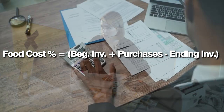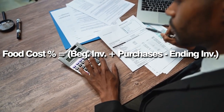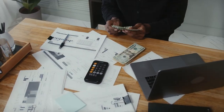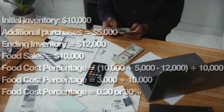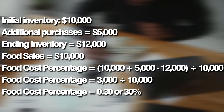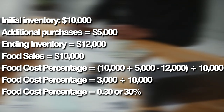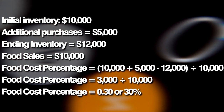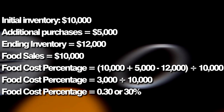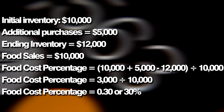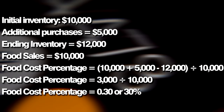Food cost percentage equals beginning inventory plus purchases minus ending inventory, divided by food sales. For example: initial inventory $10,000, additional purchases $5,000, ending inventory $12,000, food sales $10,000. Food cost percentage equals (10,000 + 5,000 − 12,000) / 10,000 = 3,000 / 10,000 = 0.3 or 30%.